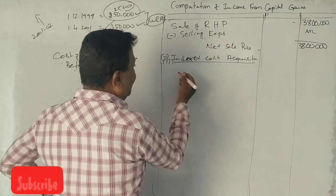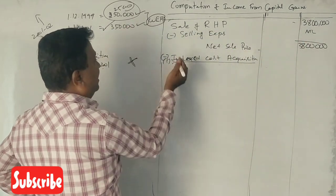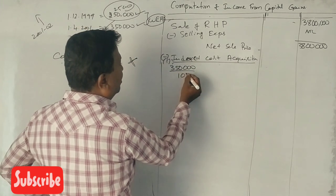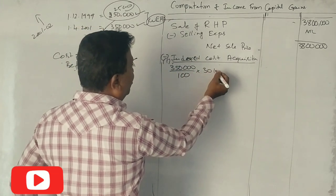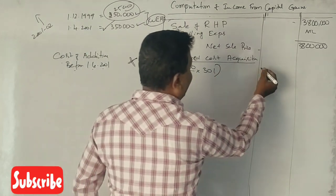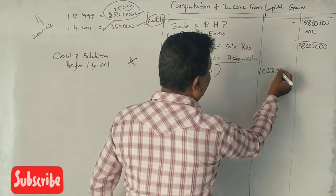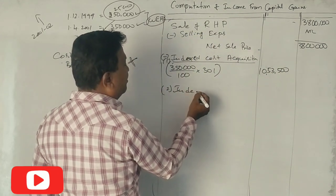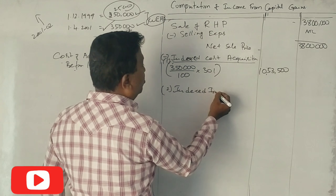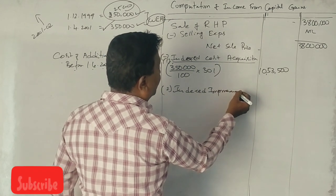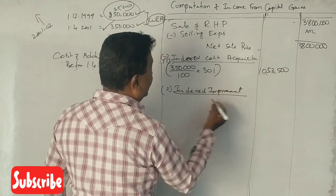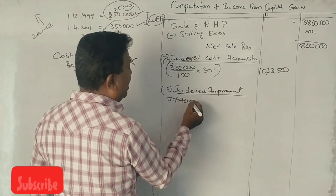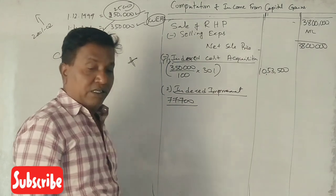Indexed cost of acquisition: 3,50,000 into 301 divided by 100 equals 10,53,500. Indexed cost of improvement: 77,700, our index is 115 into 301, equals 2,03,587.